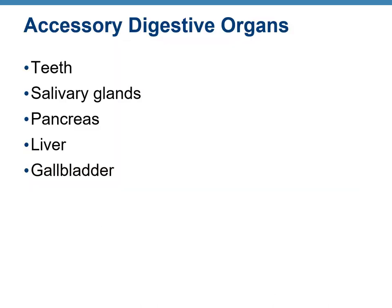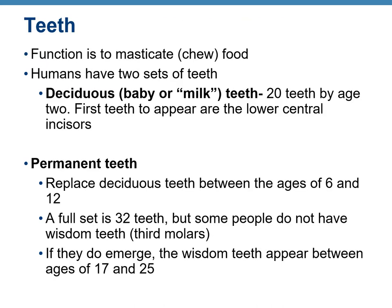We are done with the organs of the alimentary canal and will now learn about the accessory digestive organs: teeth, salivary glands, pancreas, liver, and gallbladder. Human beings have two sets of teeth. The function of teeth is to start the mechanical digestion of food, which is mastication. The first set are known as deciduous teeth, or baby teeth or milk teeth, which are 20 in number and usually appear by age two.